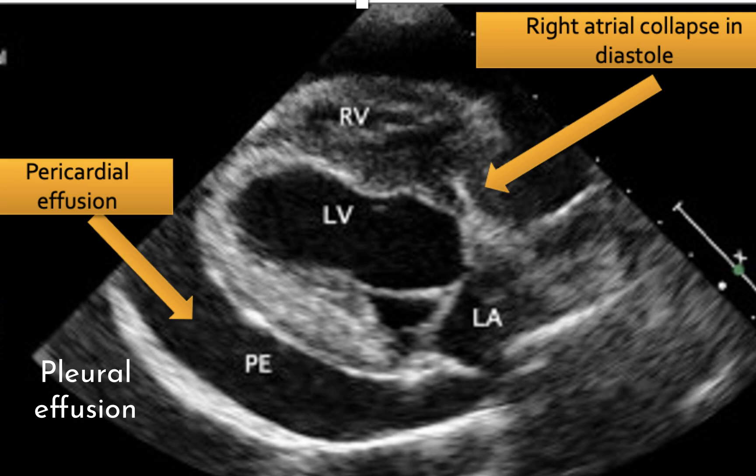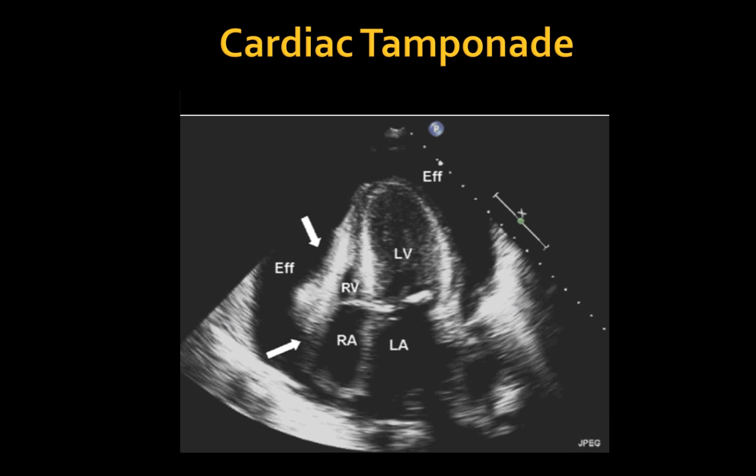There is also pleural effusion present. This is a left apical four-chamber view showing a moderate to large amount of pericardial effusion resulting in partial right atrial and right ventricular wall collapse.